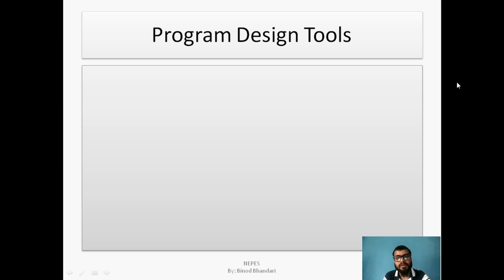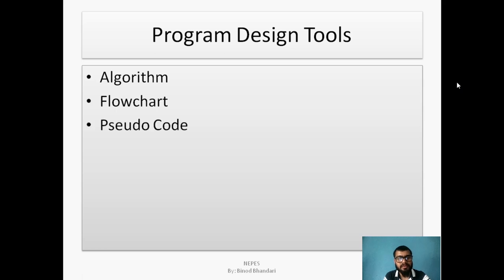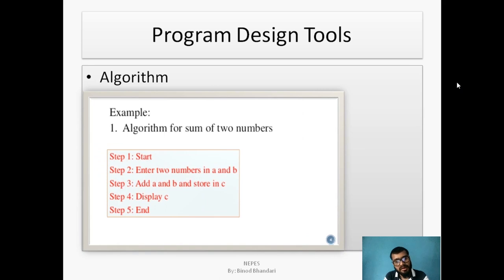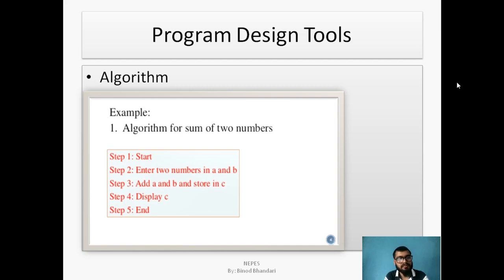Now we have program design tools. There are three: algorithm, flowchart, and pseudo-code. An algorithm is a step-by-step process to design a program. For example, an algorithm to find the sum of two numbers: enter two numbers A and B, add A plus B and store in C, then display the output and end.